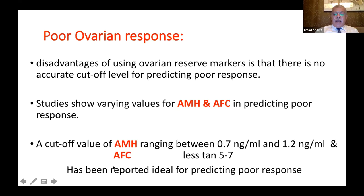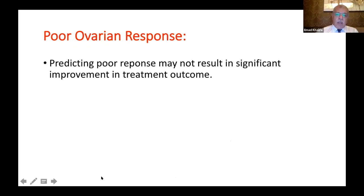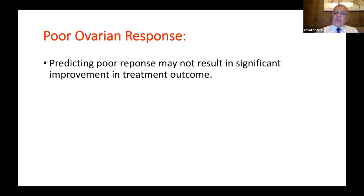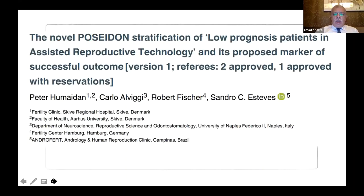Combining AMH and AFC together may provide ideal predictors for poor ovarian response. However, an important point is that predicting poor ovarian response may not result in significant improvement in treatment outcome — in many cases, whatever is done, the end result is poor. Predicting poor response is very important for counseling the patient about high cost and realistic expectations, but in many cases, treatment outcome cannot be significantly improved.